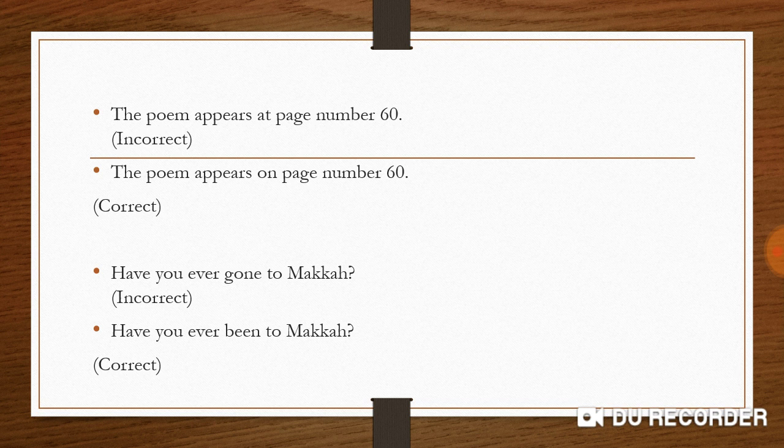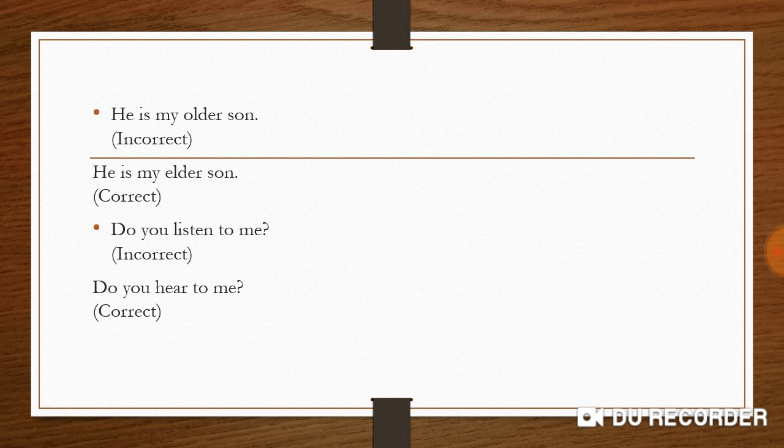Next: 'Have you ever gone to Mecca?' The person being asked is currently in Pakistan, not in Mecca. If someone has been and returned, we use 'been,' not 'gone.' So the correct sentence is: 'Have you ever been to Mecca?' — meaning have you ever visited and come back. 'Have you ever gone' is incorrect.